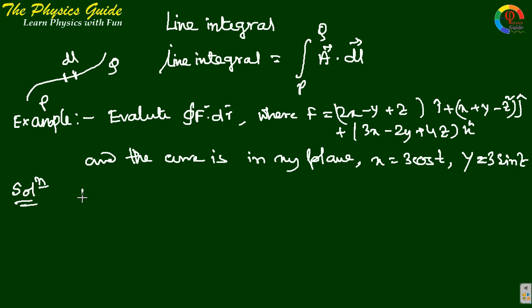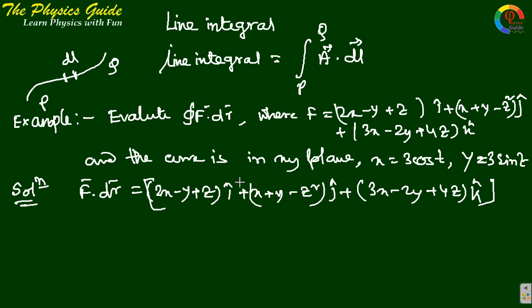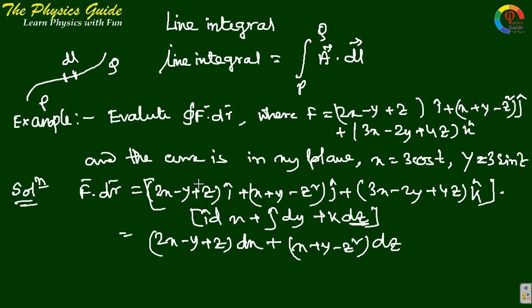F·dr = [(2x - y + z)î + (x + y - z²)ĵ + (3x - 2y + 4z)k̂]·[îdx + ĵdy + k̂dz]. This gives (2x - y + z)dx + (x + y - z²)dy + (3x - 2y + 4z)dz.